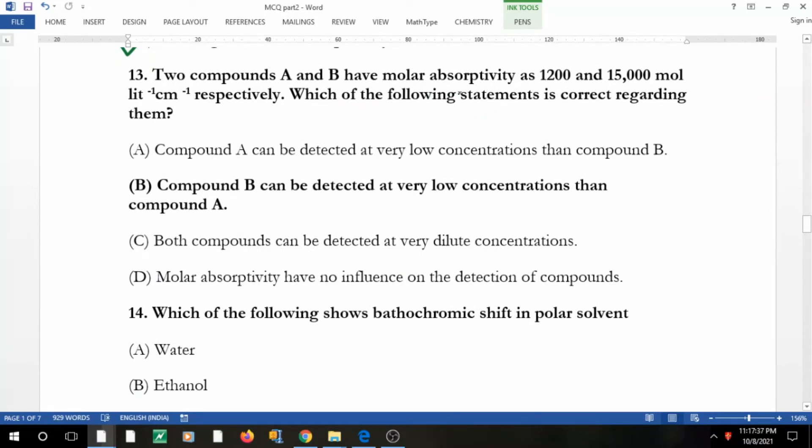Two compounds A and B have molar absorptivity this and this. Which of the following statement is correct? Compound A can be detected at very low concentration. You see the epsilon is more here, right? So if the absorptivity is more, A is equal to epsilon c l, this is more, then the compound can be detected at very low concentration.